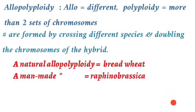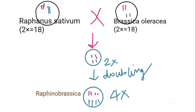Bread wheat is a naturally occurring allopolyploid, and a man-made allopolyploid is Raphanobrassica. Raphanus sativum (radish) is diploid with 18 chromosomes, and Brassica oleracea (cabbage) is also diploid with 18 chromosomes. When you cross these two varieties you get a diploid hybrid organism, which is basically sterile in nature.